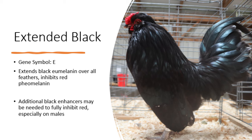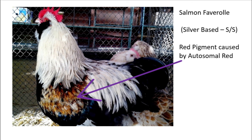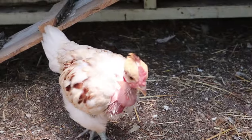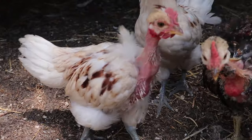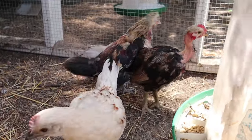One example of a black enhancer is ML, melanotic. Leakage occurs when black does not fully inhibit phaeomelanin, the red pigment. Keep in mind that if the red pigment is diluted to silver, it could appear white instead. There is actually another type of red pigment referred to as autosomal red, which is not affected by silver. So if you're seeing red leakage on a silver-based bird, this is autosomal red. The science of leakage is also not fully understood, and it has been theorized that there are probably other black enhancers that have not been identified that are involved in inhibiting the red pigment.